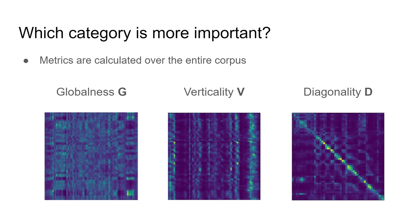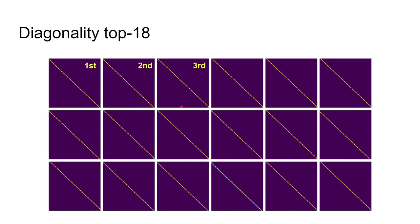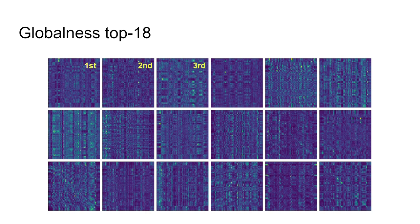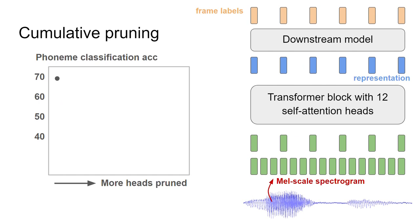Given the different functionality of three categories, we wish to answer which one is more important. Hence, we quantify attention heads with three metrics: globalness, verticality, and diagonality. Since the detailed mathematical definitions of metrics are hard to follow, we will directly visualize the attention maps ranked by these three metrics. And one can refer to our paper for the definitions. Here are the top 18 heads according to the diagonality. And the top 18 heads for verticality, the top 18 heads for globalness.